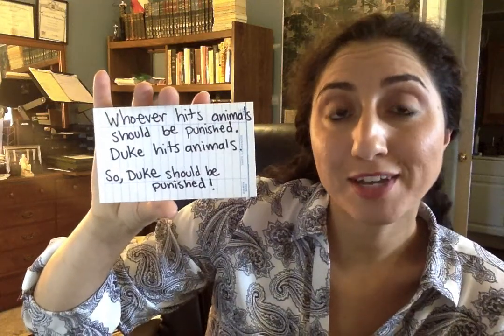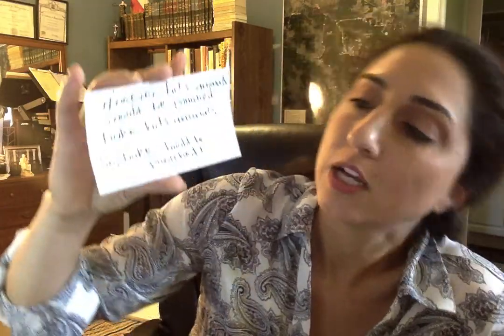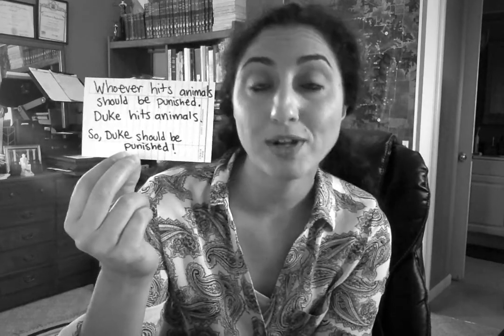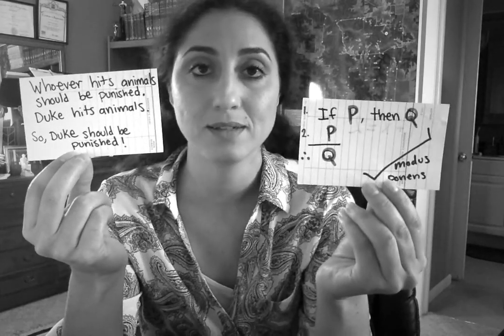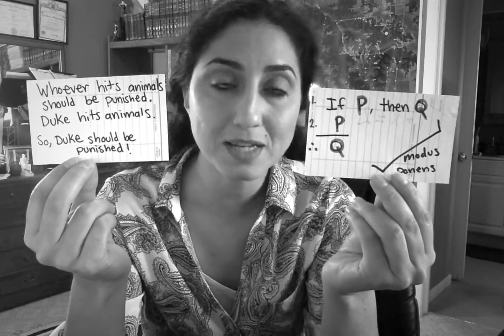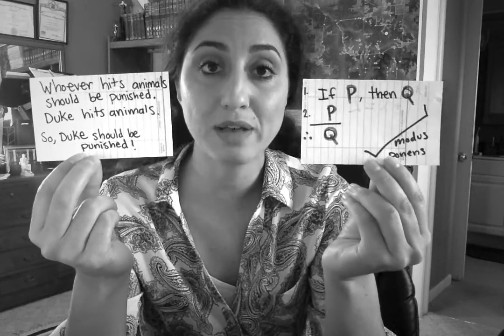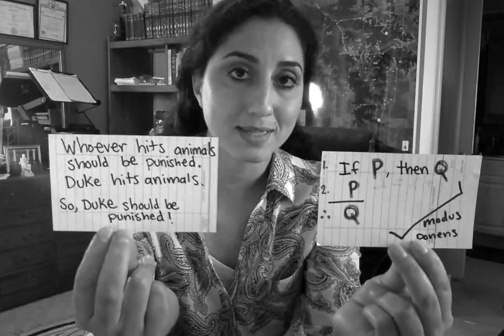So what we have here is the conclusion and then one premise. Saying that Duke should be punished because whoever hits animals should be punished is the same thing as saying Q because if P, then Q. In both instances, you've left out what appears to be the second premise in the argument.